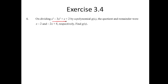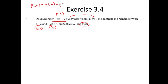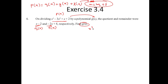Now a different problem: on dividing a polynomial by some divisor, we get a certain quotient and remainder. Using the division algorithm: F of X equals Q of X times G of X plus R of X — equivalently a = bq + r. Substituting, G of X is what we need to find.